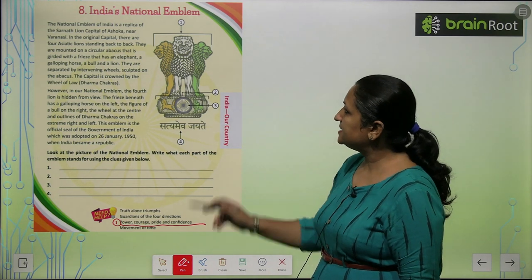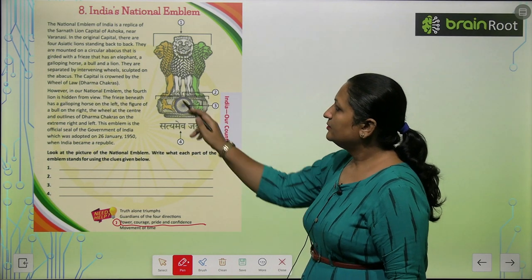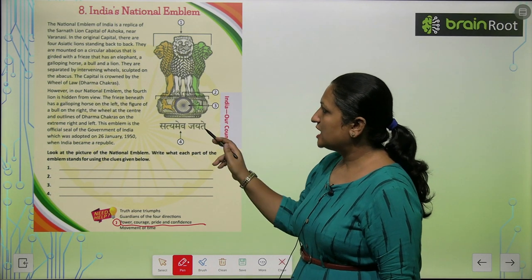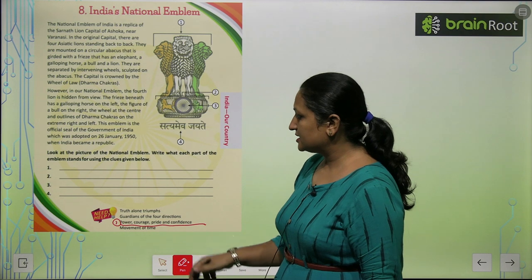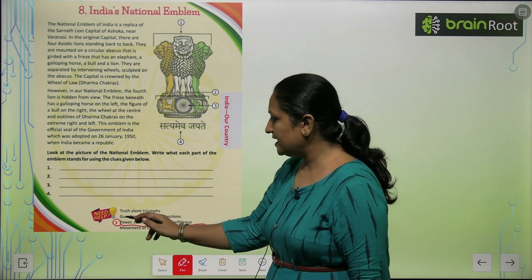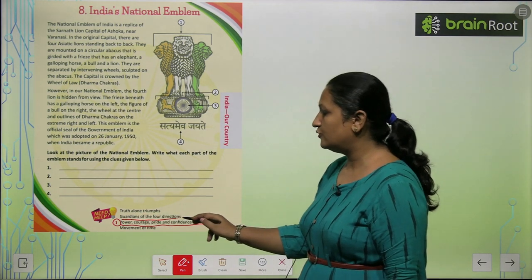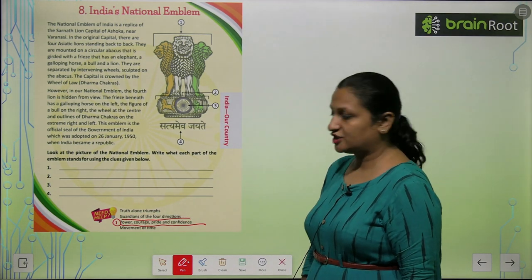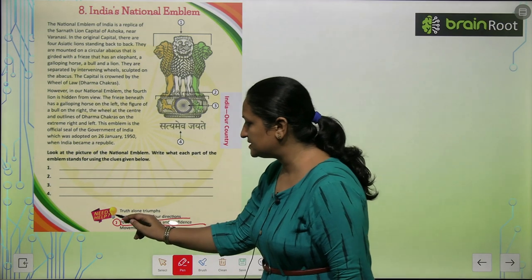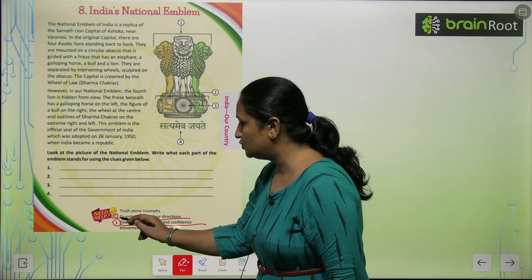The second part is the abacus. The abacus represents the guardian of the four directions.